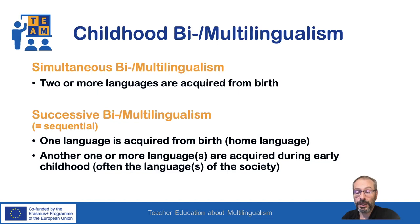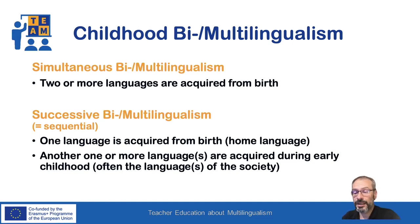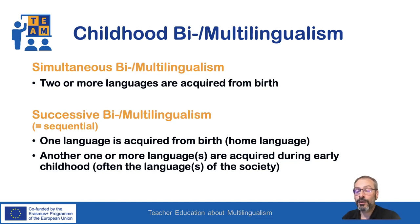Within childhood multilingualism, an important distinction is between simultaneous versus successive or sequential multilingualism. We talk about simultaneous multilingualism when an individual acquires one language from birth — the home or family language used by the main caregivers — and another one or more languages are acquired during early childhood. This additional language or languages are often the languages spoken outside of the family in the society.